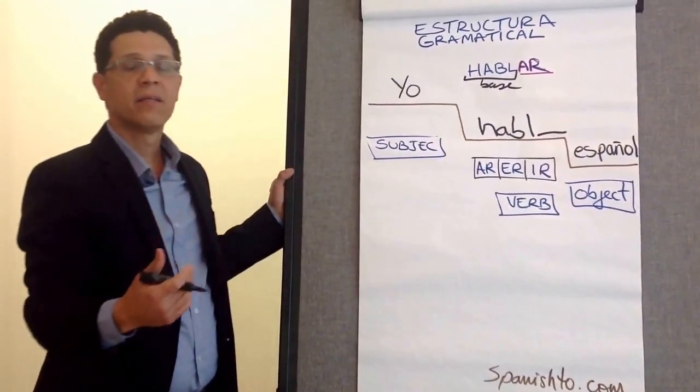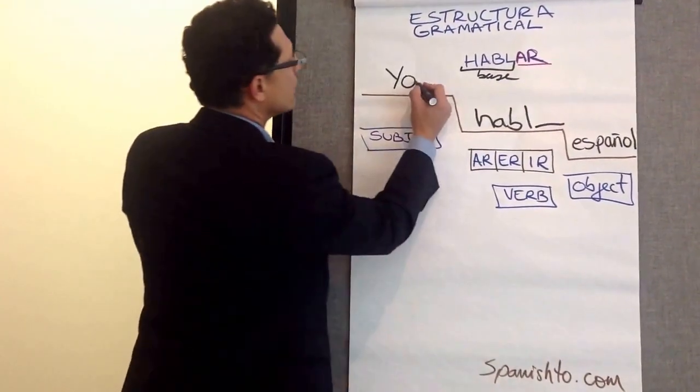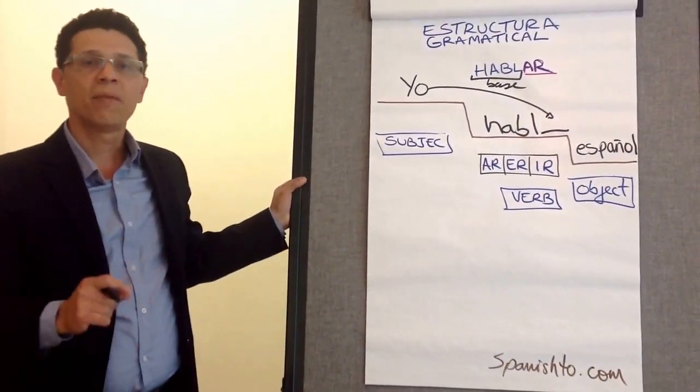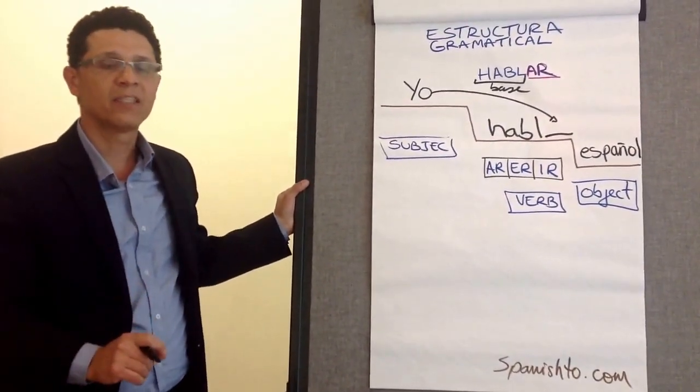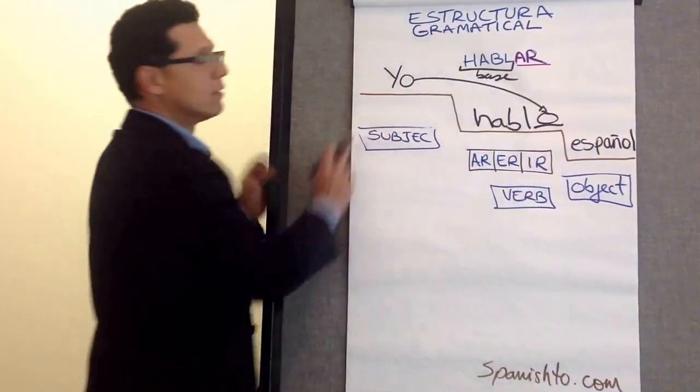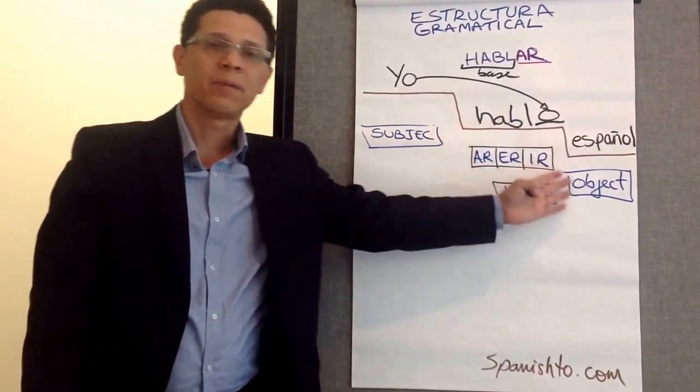And now the ending needs to be replaced with another ending. In the case of yo, 99.9% of the time in Spanish is replaced with the letter O. So you end up with yo, hablo, español.